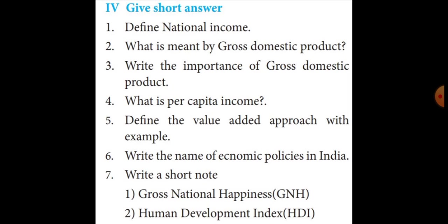The second question: what is meant by gross domestic product? The answer is the same page — page number 293, cross-domestic product heading, number 2. Gross domestic product is the total value of output of goods and services produced by the factors of production within the geographical boundaries of the country.